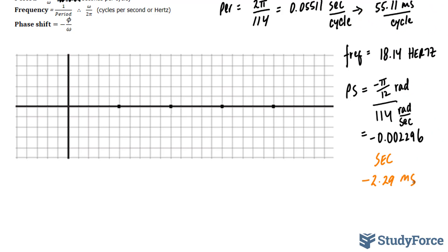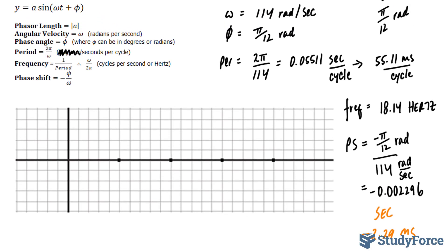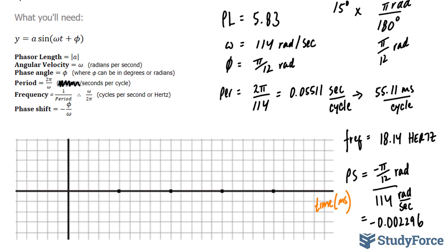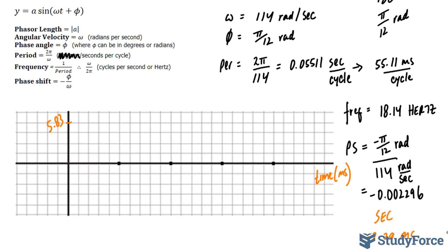Now that we have all the information we need, we will first plot the period, and the period was at 55.11 milliseconds. So the x-axis here will represent time in milliseconds, and the y-axis will represent the output. And since there were no units provided, I'll simply mark this as 5.83, our amplitude, and mark the same part down here as negative 5.83.